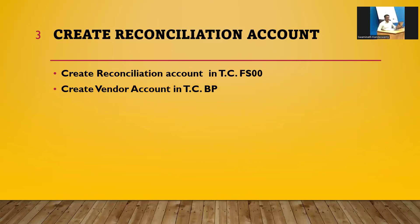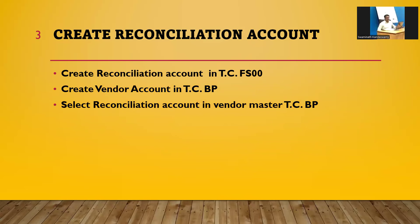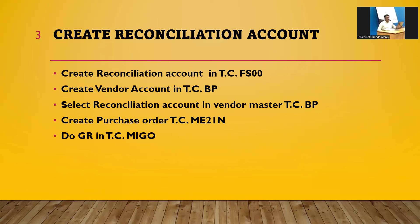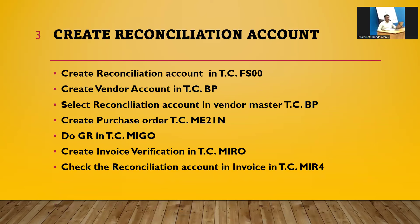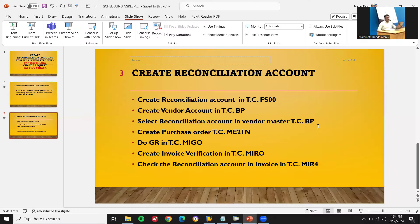The process I'm going to follow: first I'll create a reconciliation account in FS00, then create a vendor account in the BP transaction code and select the reconciliation account in the vendor master. Next I'll create a purchase order in ME21N, do goods receipt in MIGO, and then invoice verification in the MIR transaction code. Finally I'll check the reconciliation account in MIR4 — invoice verification display.